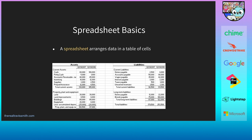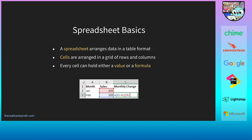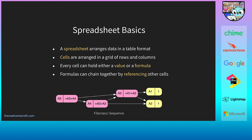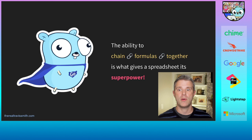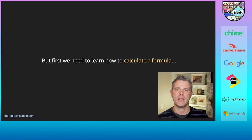A spreadsheet arranges data in a table of cells. Cells are arranged in a grid of rows and columns, and every cell can be referenced by its row and column using a letter-number combination like A1 or C5. Every cell can hold either a value, which is an entered value, or a formula, which is a calculated value. Formulas can chain together by referencing other cells. The ability to chain formulas together is what gives a spreadsheet its superpower — many problems can be broken down into a series of smaller steps assigned to individual formulas in cells.